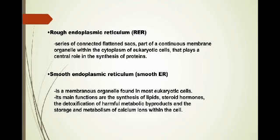So there are two kinds of endoplasmic reticulum: the rough endoplasmic reticulum and the smooth endoplasmic reticulum. When we say RER, it is the series of connected flattened sacs, part of a continuous membrane organelle within the cytoplasm of eukaryotic cells that plays a central role in the synthesis of proteins. When we say smooth ER, it is a membranous organelle found in most eukaryotic cells. Its main functions are the synthesis of lipids, steroid hormones, the detoxification of harmful metabolic byproducts, and the storage and metabolism of calcium ions within the cell.